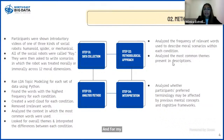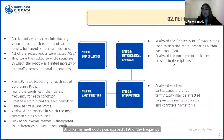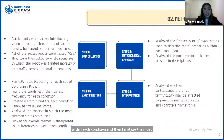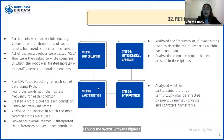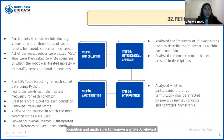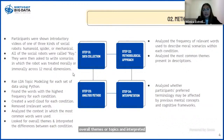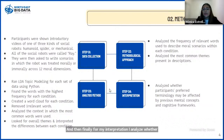For my methodological approach, I analyzed the frequency of relevant words used within each moral scenario and within each condition, then analyzed the most common themes present in those descriptions. For the analysis method, I ran LDA topic modeling for each set of data using Python, found the words with the highest frequency within each condition, and created a word cloud for each condition, removing any irrelevant words such as pronouns. I then analyzed the context in which the most common words were used and looked for overall themes or topics, interpreting the differences between each condition. Finally, I analyzed whether participants' preferred terminology reflected previous mental concepts or heuristics they have about technology and social robots.